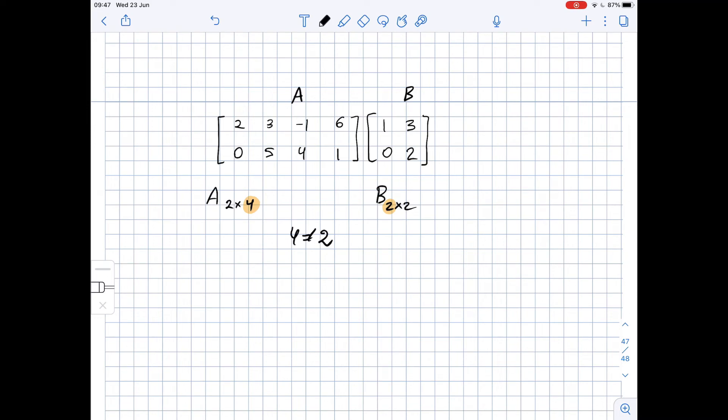The number of columns in matrix A does not equal the number of rows in matrix B, so the product is not possible in this case.